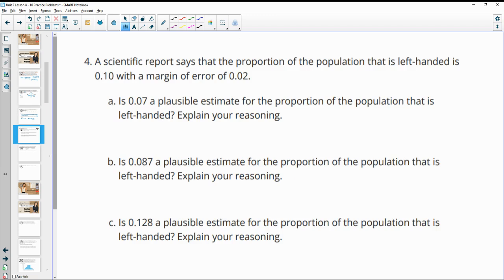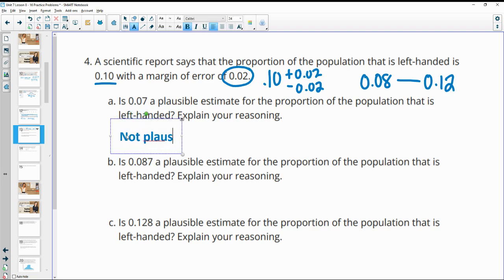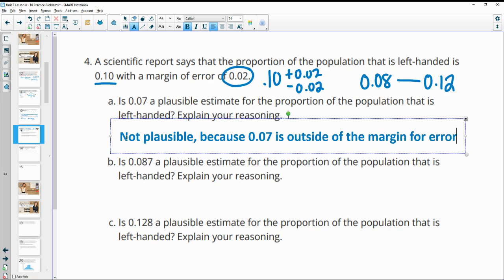Number four, a scientific report says that the proportion of the population that is left-handed is 0.1 with a margin of error of 0.02. Is 0.07 a plausible estimate? So use the margin of error to come up with an interval. So let's do 0.10 plus 0.02 and minus 0.02. So minus 0.02 would give us 0.08 for our lower limit. And then 0.1 plus 0.02 would give us 0.12 for our upper limit. So our proportions of left-handed people should be between these two numbers. If they're outside of that number, then it's not a plausible estimate. So 0.07 is not plausible because 0.07 is outside of the margin of error for the situation.